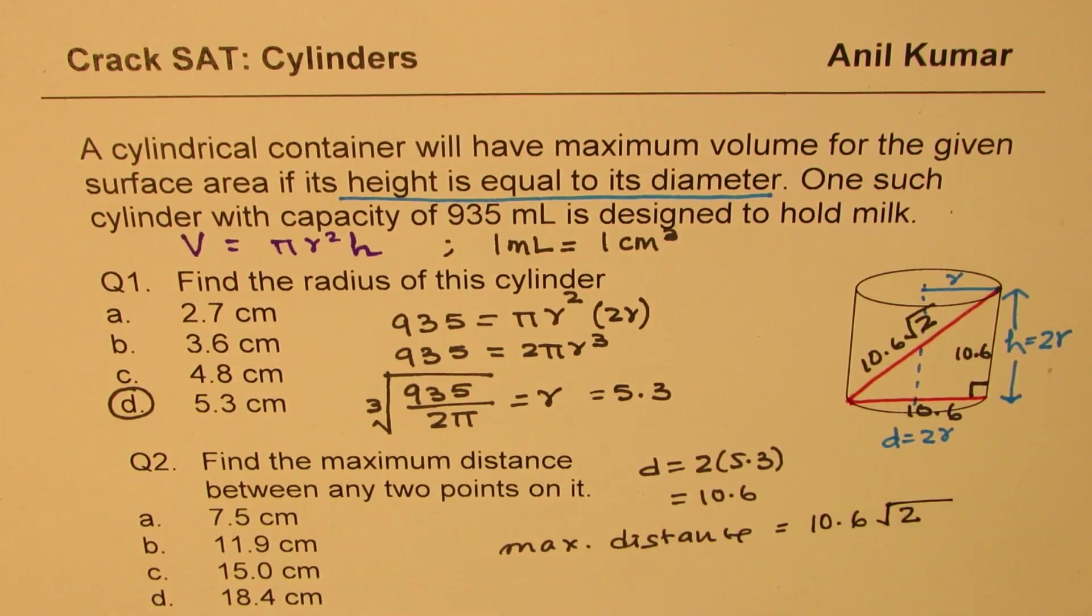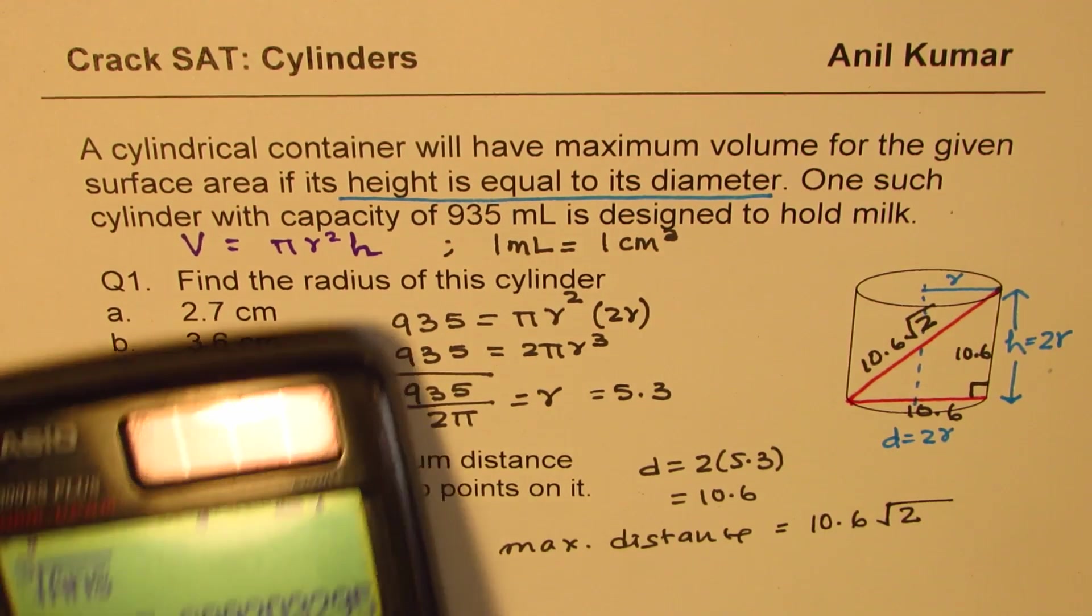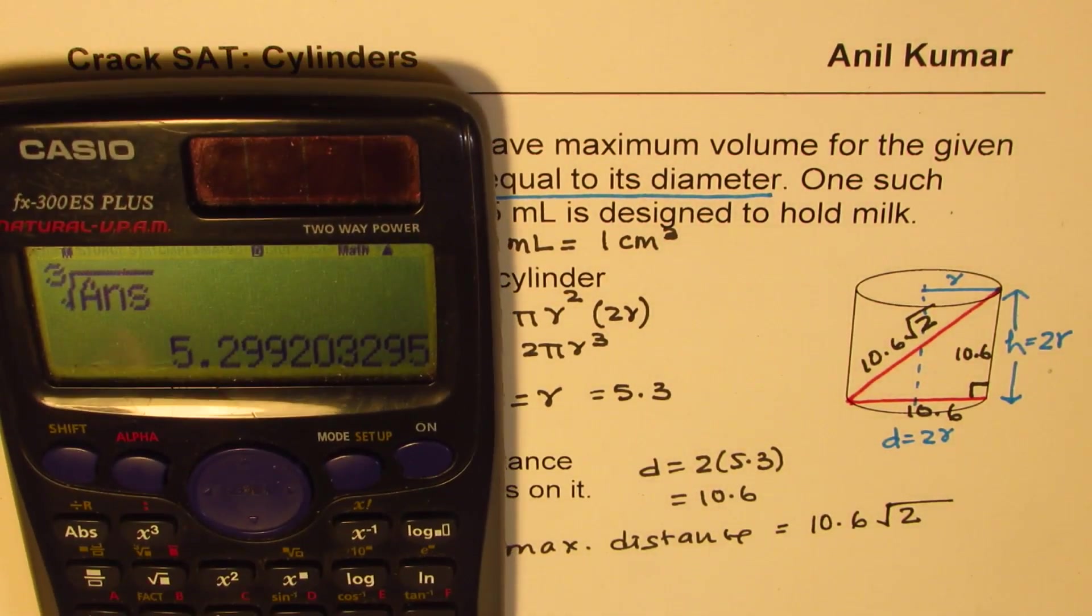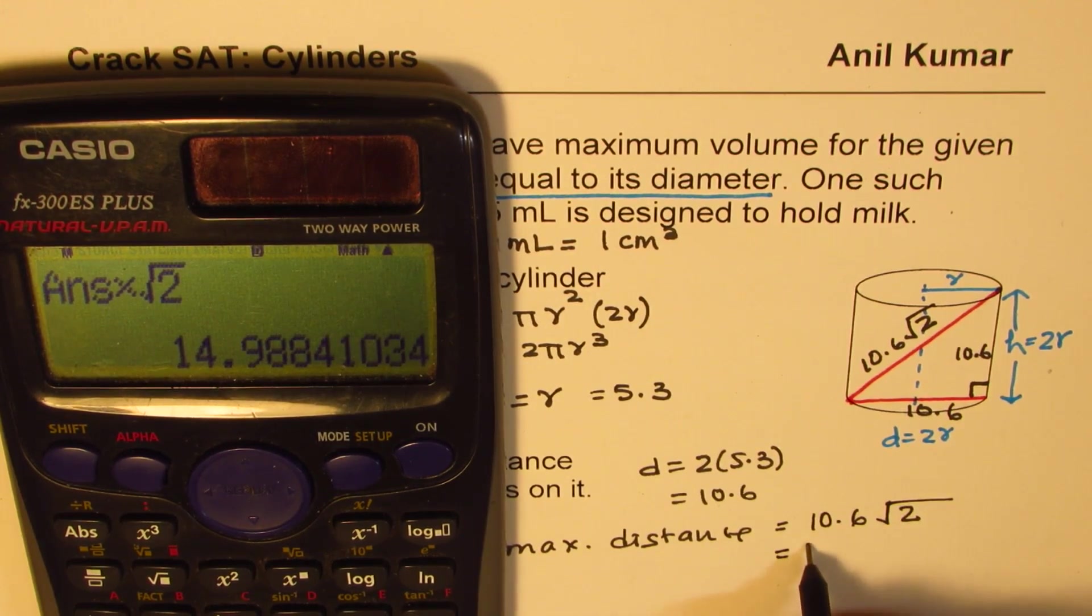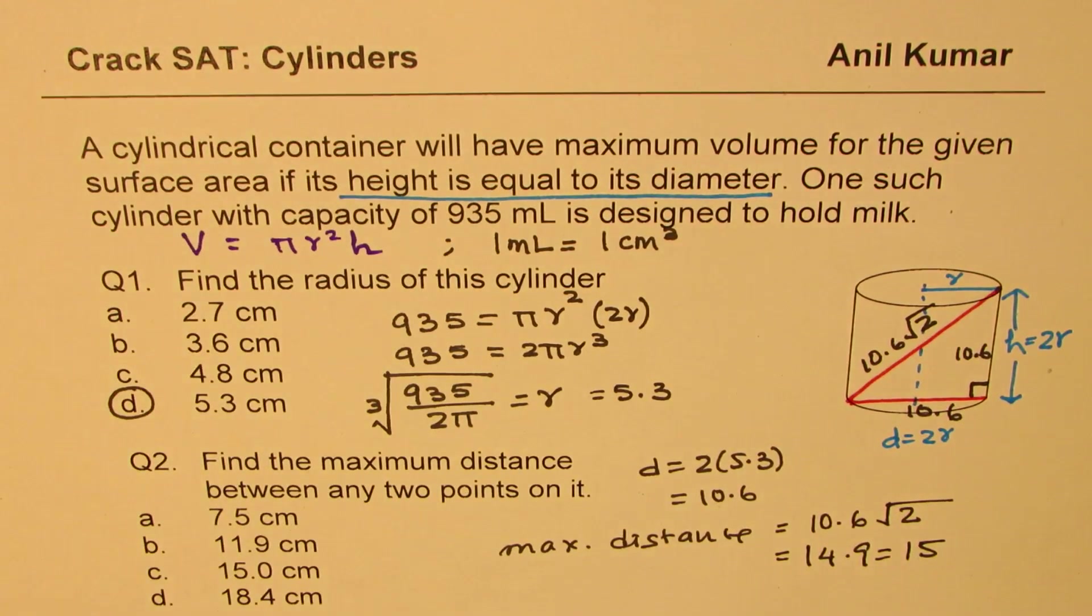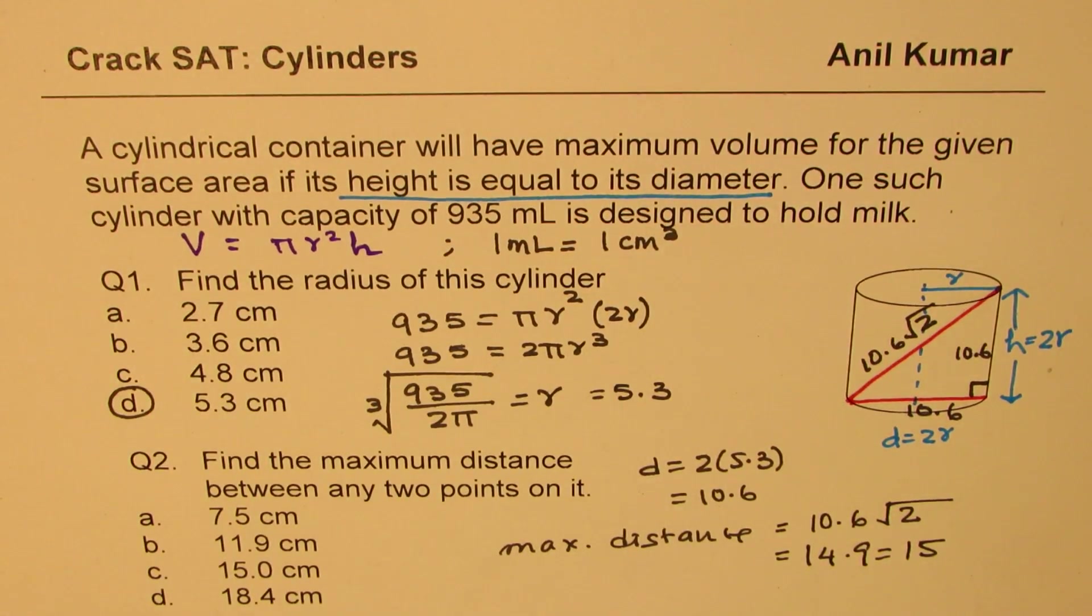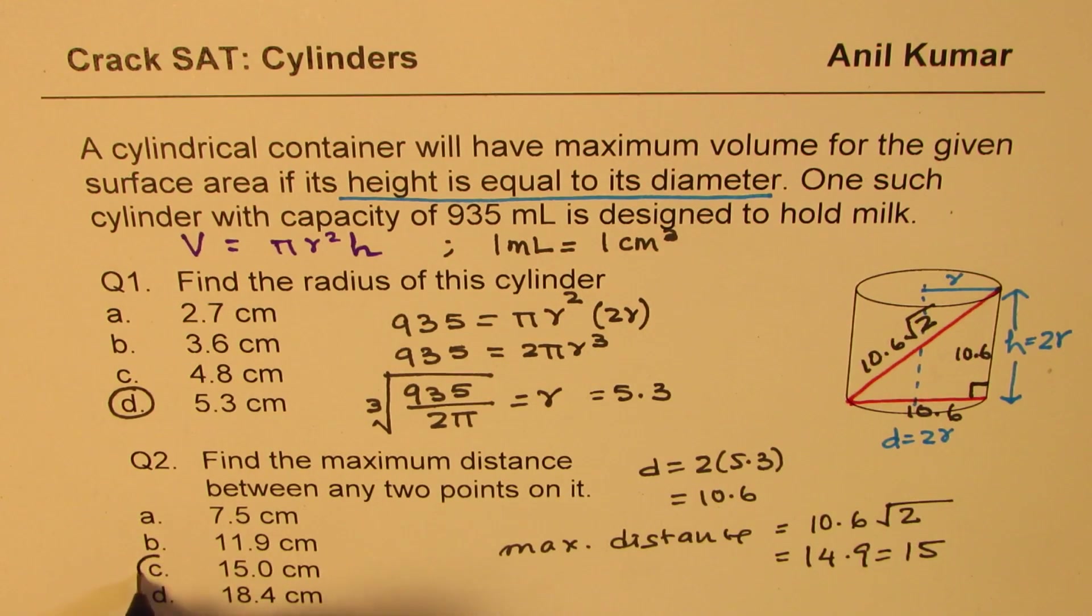So maximum distance will be—you can do A squared plus B squared, square root—will be 10.6 square root 2. So we'll multiply 10.6 by square root 2. So what I'll do is, I got 5.299. I'll just multiply this by 2 and then by square root 2 to get the answer. We get this as 14.9, which is approximately 15. So 15 centimeters is the maximum distance. Option C is the right option. Perfect. So that is how we can actually solve this question.